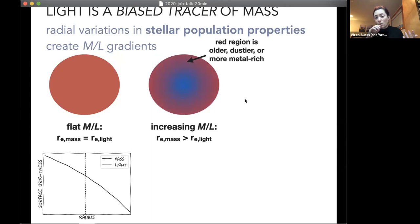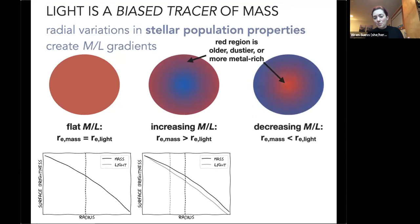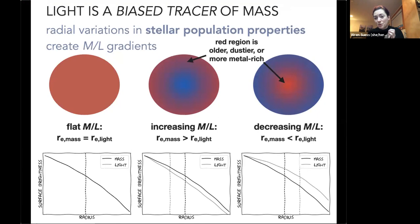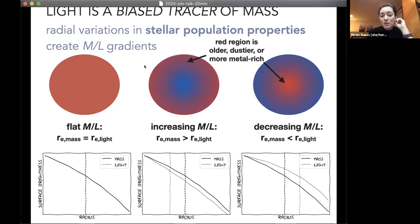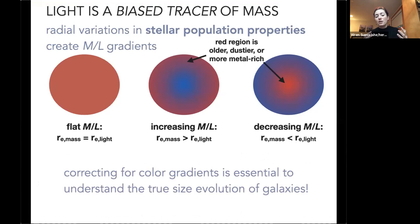But you could also be in a case where the outskirts of your galaxy are redder — either because they're older, dustier, or more metal-rich — and then your mass profile is more extended than your light profile. Or the opposite: a redder center means your mass profile is more compact than your light profile. For instance, a centrally concentrated starburst puts young stars at the center, or a bulge at the center would produce these radial color gradients. Accounting for color gradients is necessary to understand the true size evolution of galaxies.